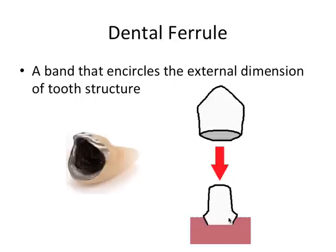So it's a relatively straightforward case. Technically the ferrule is therefore the entire axial wall of the crown which contacts and braces up against the axial tooth structure. This provides a lot of fracture resistance and lateral force resistance.